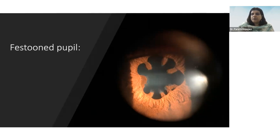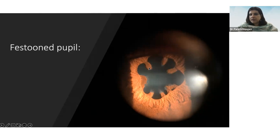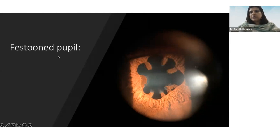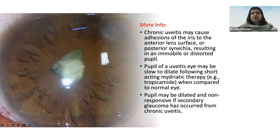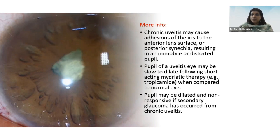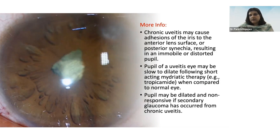If atropine is applied to a uveitic eye, the parts with synechiae don't respond, but the normal parts in between do dilate, creating an alternating normal-abnormal contour called a festooned pupil. Repeated inflammation and synechiae can make the pupil very irregular and lead to complicated cataract — telltale signs of chronic iridocyclitis. Even after resolution, the previously inflamed pupil dilates more slowly with tropicamide compared to a normal eye, as it has lost some sphincter contraction power due to prior inflammation.